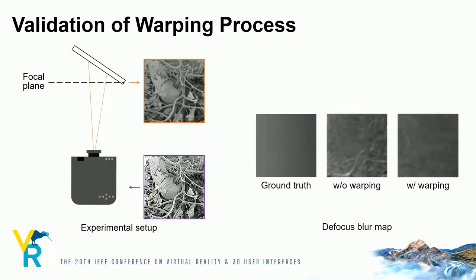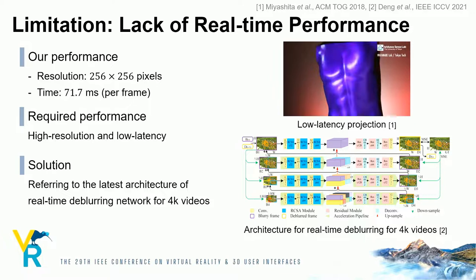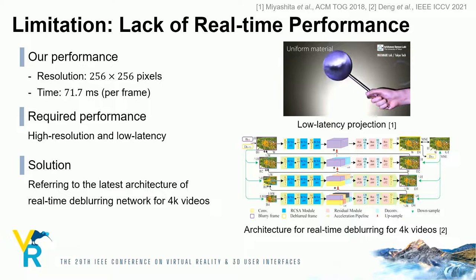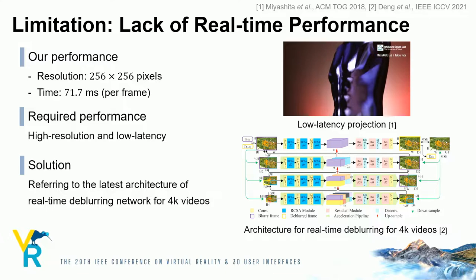One of the limitations of our project is the lack of real-time performance. The image size used in this experiment was 256 pixels in height and width, and the generation time per image was 71.7 milliseconds. However, we think that in the future, high-resolution images will need to be processed in real time, and this will be our next goal. We believe that we can get closer to our next goal by referring to a network structure designed for real-time de-blurring of high-resolution images in computer vision.